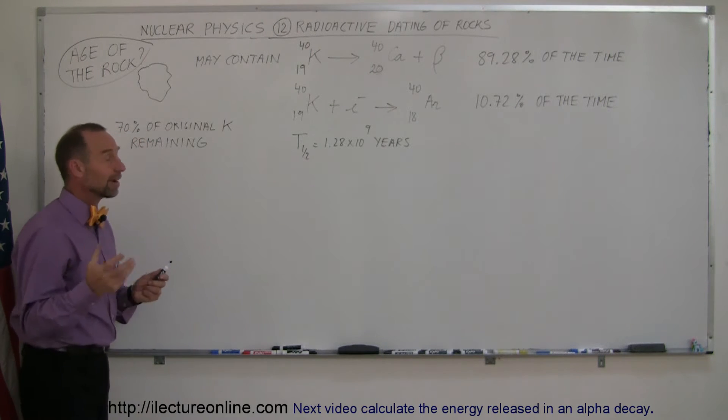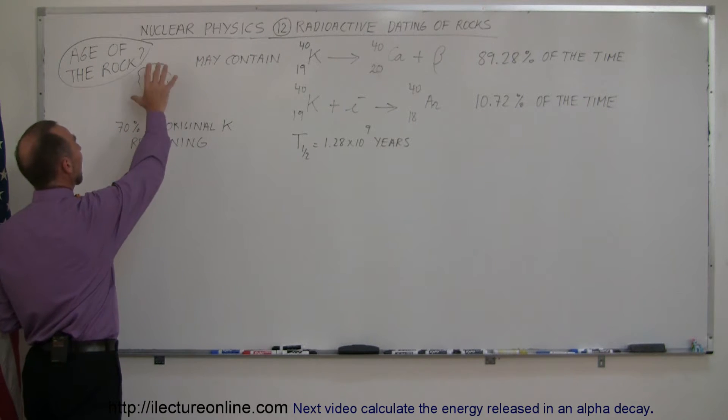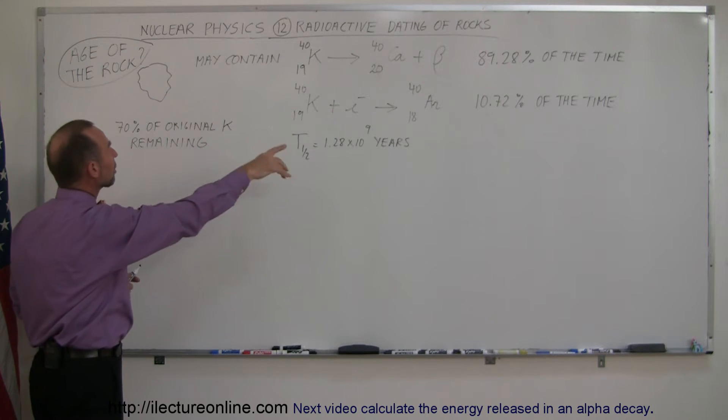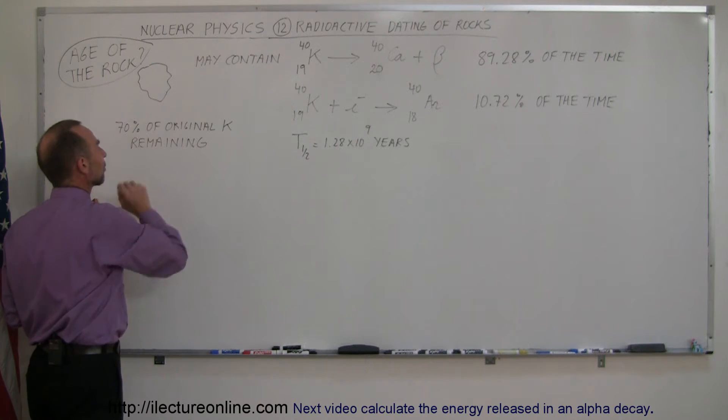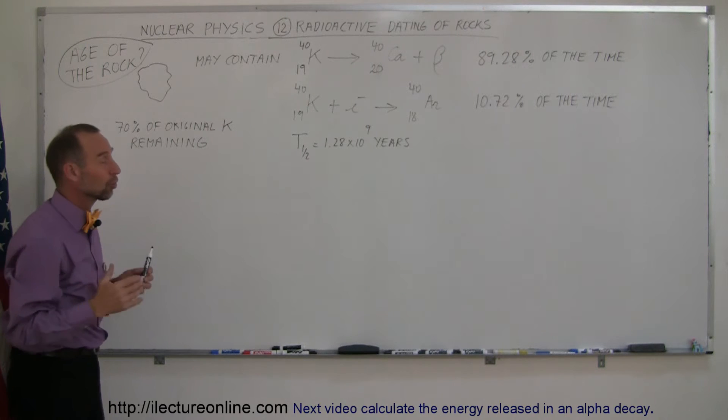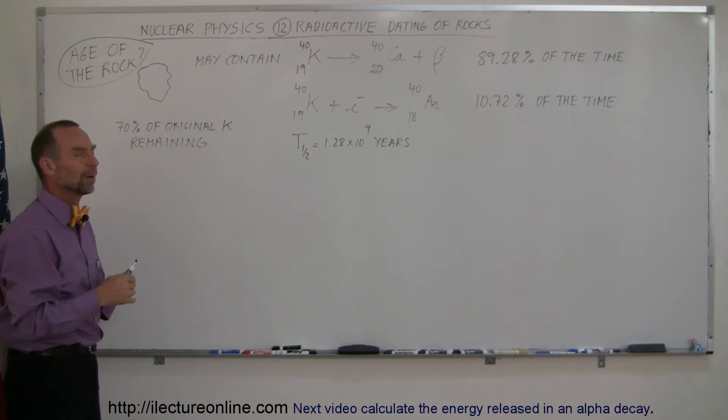then if we find a rock and we can chemically analyze and see how much argon is in the rock and how much potassium-40 is in the rock, we can therefore determine how much of the potassium already has decayed.